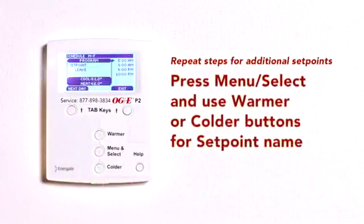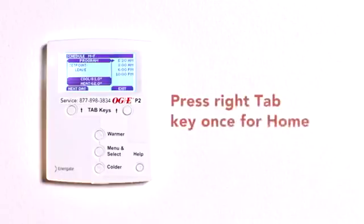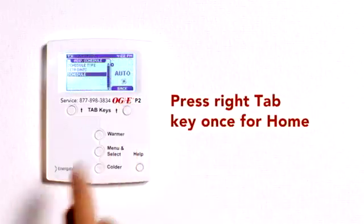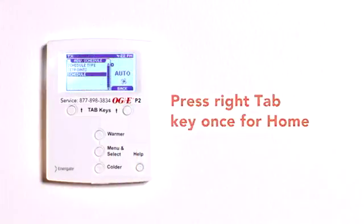For each additional set point, repeat the earlier steps using the warmer, colder, and menu select buttons. Once you've made and saved all your changes, press the right tab key once to return to the advanced schedule screen.